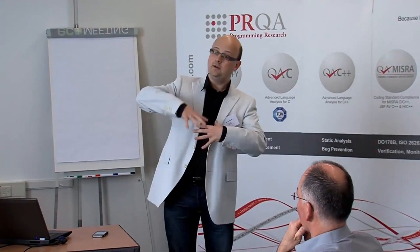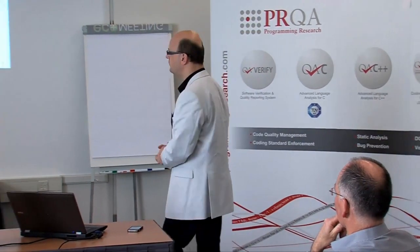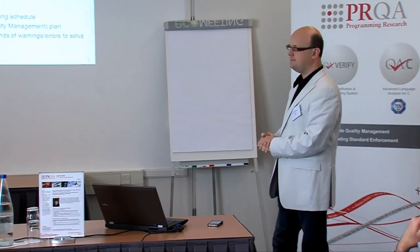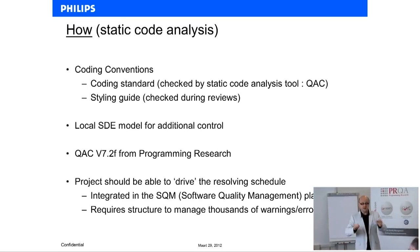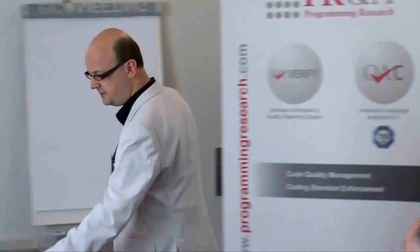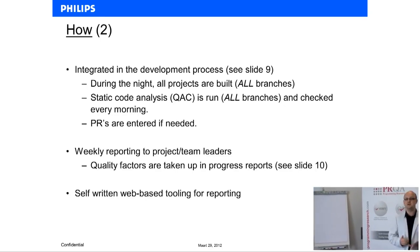It's just a way of translating. You have to make a nice translation from the bottom to the top such that they can take the good decisions. Projects should be able to drive the resolving schedule. For each QAC problem or static code analysis problem we have, we even submit a real problem report — at the same level as, for instance, teletext not working. But of course we cannot do this for every warning, otherwise we would have tons of problem reports. We have our own subset that we think is needed.